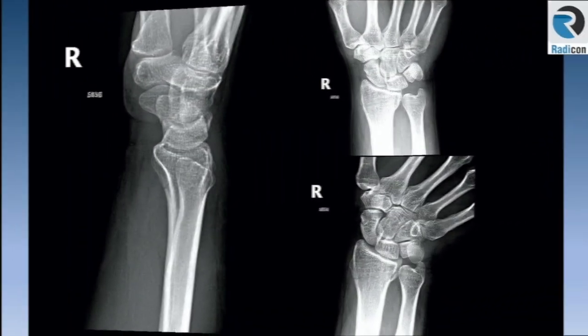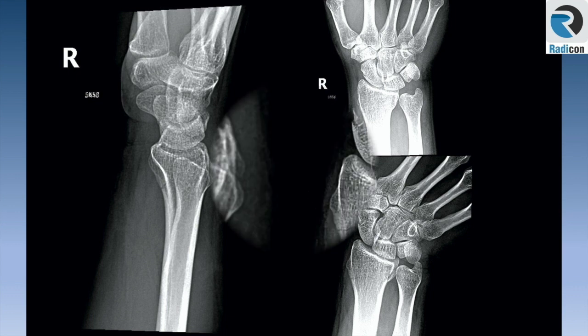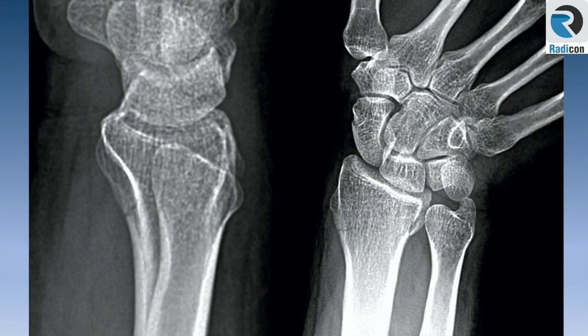Case 13 is a wrist film, unilateral, so likely trauma. Let's zoom up and it shows an undisplaced fracture of the distal radius.